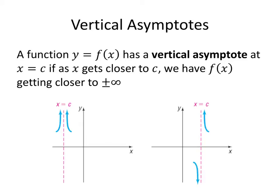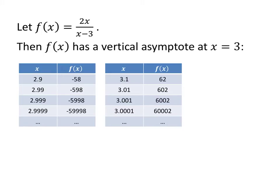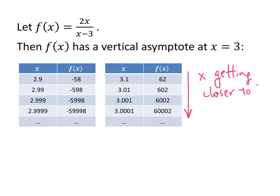So that's how you're going to tell whether or not you have an asymptote. For example, this function f(x) = 2x divided by (x minus 3) has a vertical asymptote at x equals 3. Notice that what I'm doing is plugging in numbers closer and closer to 3. What you can't do is just plug in x equals 3, because I would be dividing by 0.